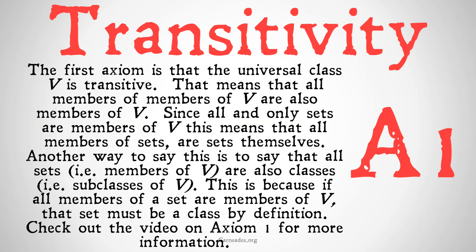The first axiom of the unit is that the universal class V is transitive. This means that all members of members of V are also members of V. Since all and only sets are members of V, this means that all members of sets are sets themselves. Another way to say this is that all sets, i.e. members of V, are also classes — in other words, subclasses of V. This is because if all members of a set are members of V, that set must be a class by definition, because classes are simply subsets of V. In other words, all sets are classes. Check out the video on axiom 1 for more information.